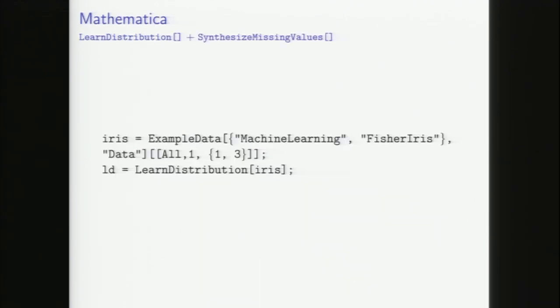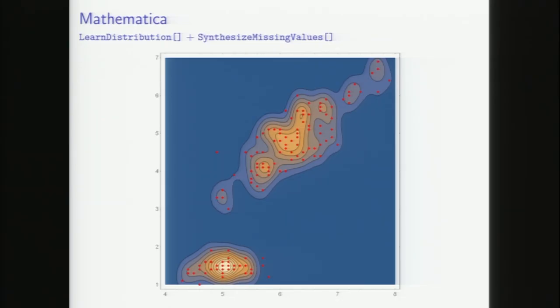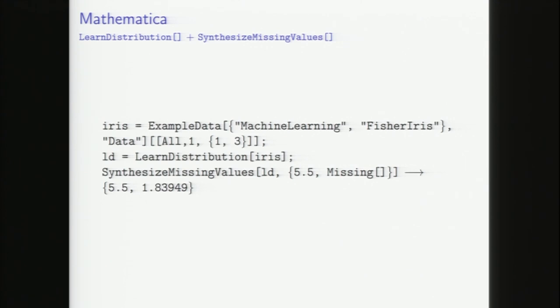Both MissForest and DataWig are regression imputation. But there's another family called density imputation. This is some of the functionality built into Mathematica — learn distribution and synthesize missing values. In a couple lines of code, we can learn the distribution of some data. The red points are our dataset, and we get a density for any given value. If we've got a data point at 5.5 and don't know the Y value, we use synthesize missing values to sample from the conditional distribution — and it came out around 1.8, which makes sense given where that point falls in the density.